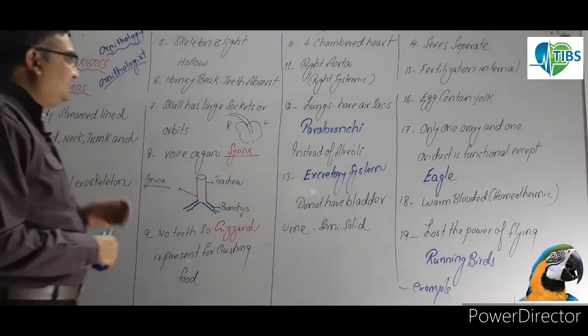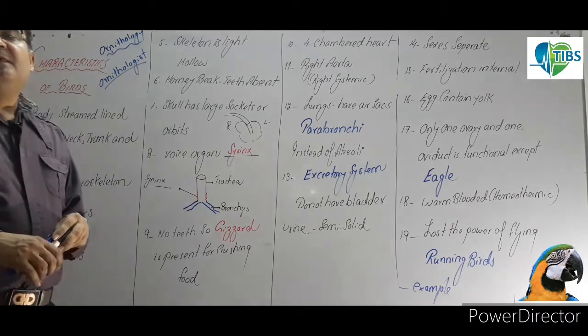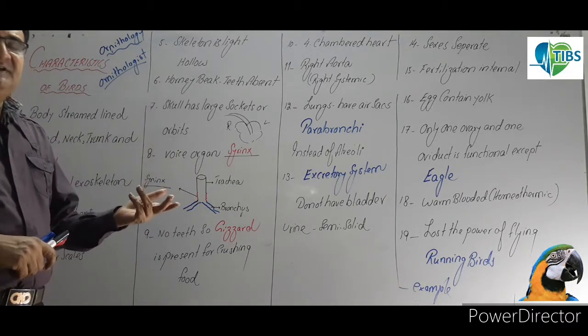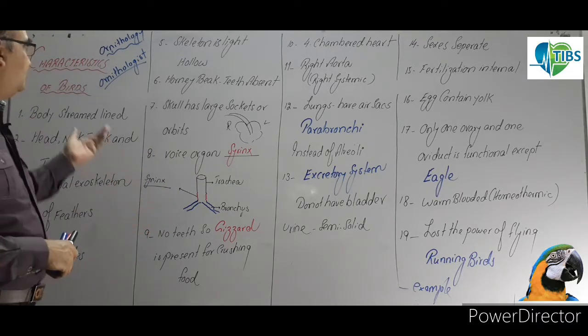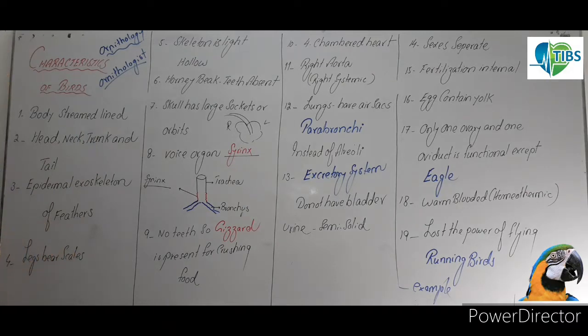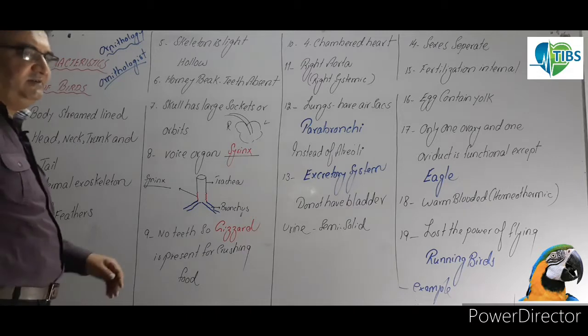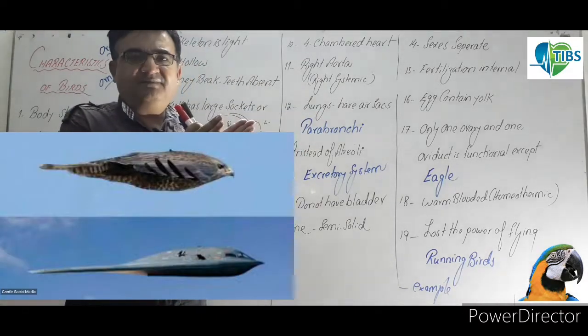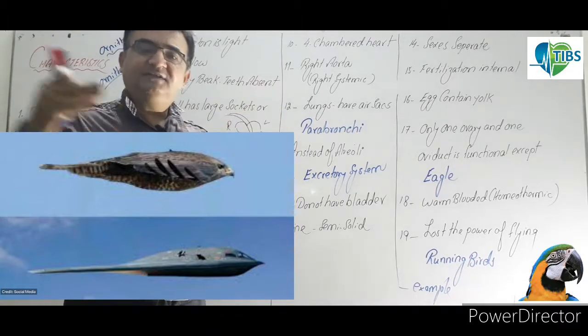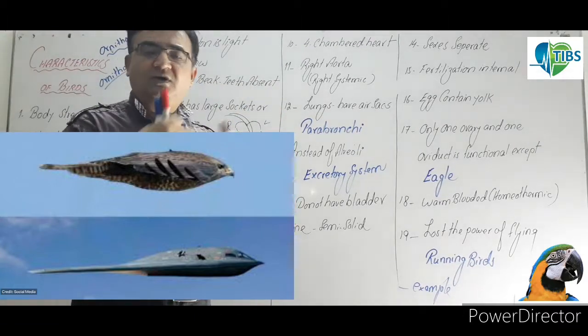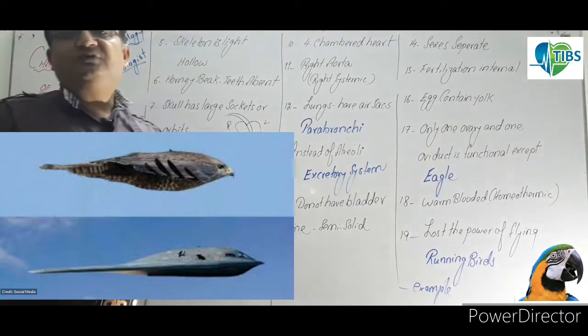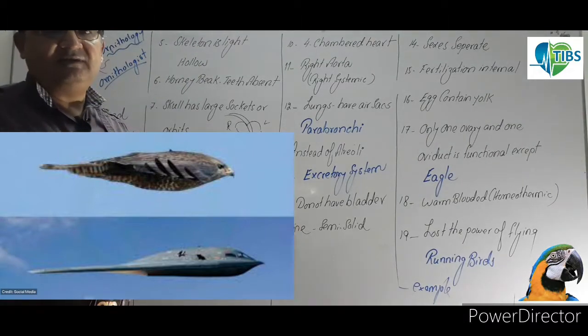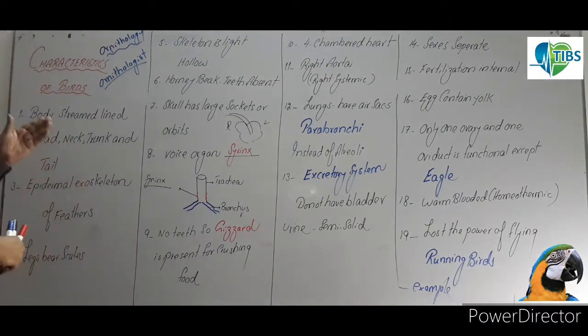The scientists who study this branch, birds, are called Ornithologist. So this is the first thing. The body is streamlined, boat shape, front and back, spindle shape, so that when they are in the wind, they have to face reduced friction, such as fish as well.